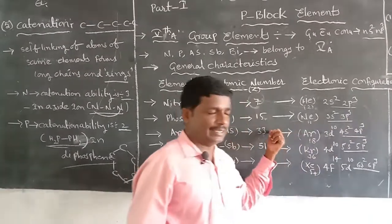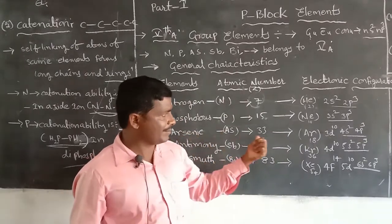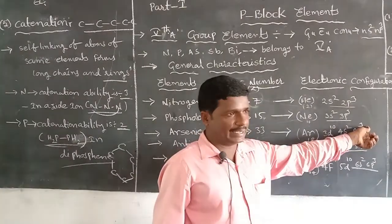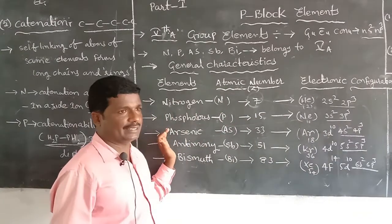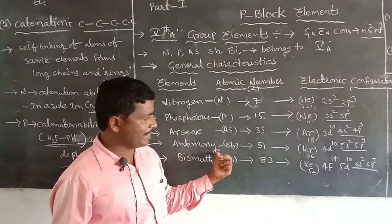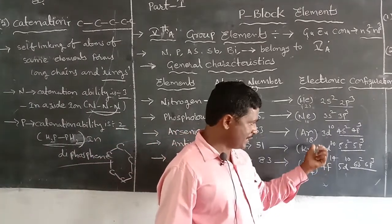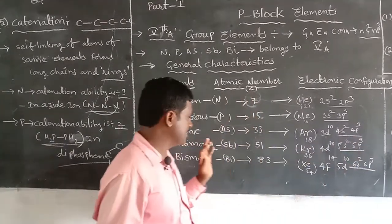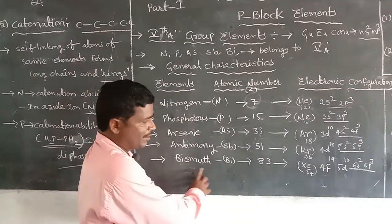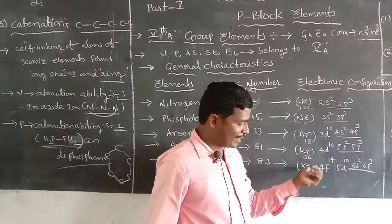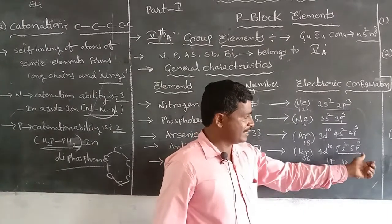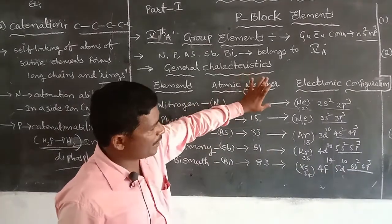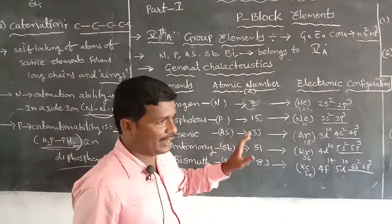The electron configuration of arsenic (atomic number 33) is: [Ar] 3d¹⁰ 4s² 4p³. The electron configuration of antimony (atomic number 51) is: [Kr] 4d¹⁰ 5s² 5p³. The electron configuration of bismuth (atomic number 83) is: [Xe] 4f¹⁴ 5d¹⁰ 6s² 6p³. All Group 5A elements are also called pnictogens, and in each case the outermost shell contains 5 electrons.